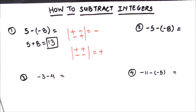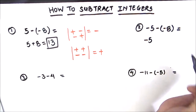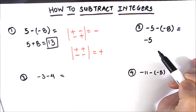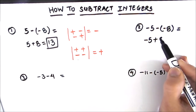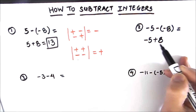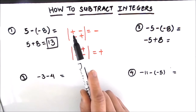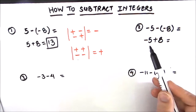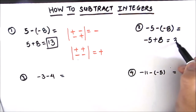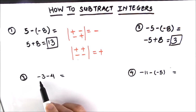Let's move on to our second example. We copy the first number, which is negative 5. Now we have two negative signs between the two numbers. When there are two signs that are the same, the sign changes to positive, giving us negative 5 plus 8. Since we now have a positive and a negative number, the signs are opposite, so we subtract: 8 minus 5 is 3. That is our final answer.